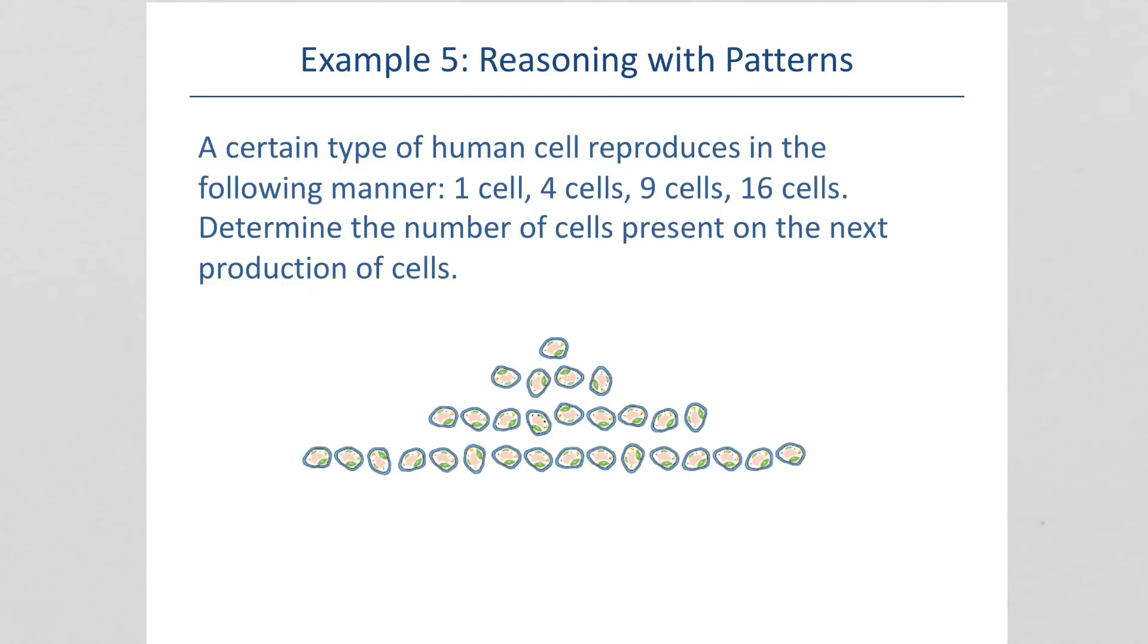A certain type of human cell reproduces in the following manner. One cell, four cells, nine cells, 16 cells. Determine the number of cells present on the next production of cells. So it looks like we've got perfect squares again. One squared is 1. Two squared is 4. Three squared is 9. Four squared is 16. And so the next set would be 5 squared, 25.